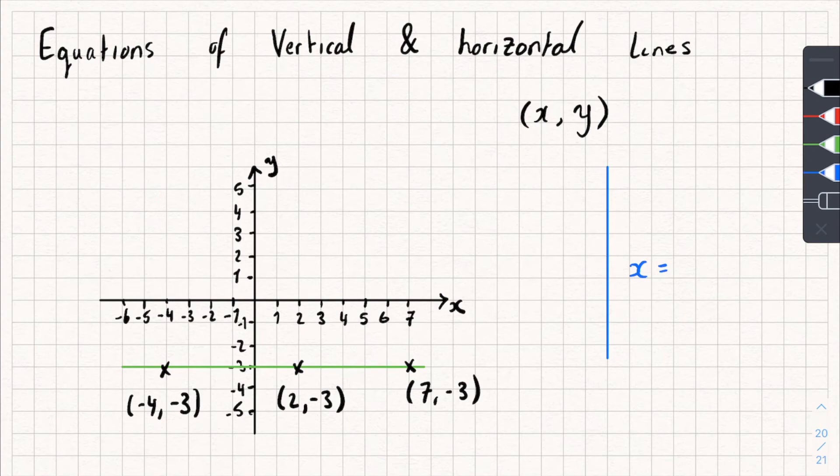What do all of these coordinates have in common? Massive hint from the last example we did. Well, hopefully you can notice they all have a y-coordinate of negative 3. So we could describe this line as y equals negative 3, because all of the y-coordinates on this line are negative 3.